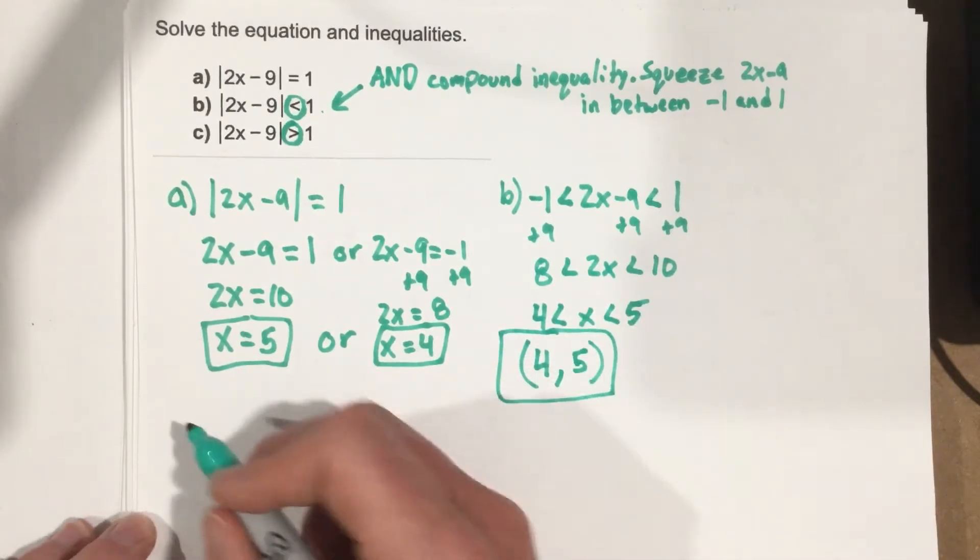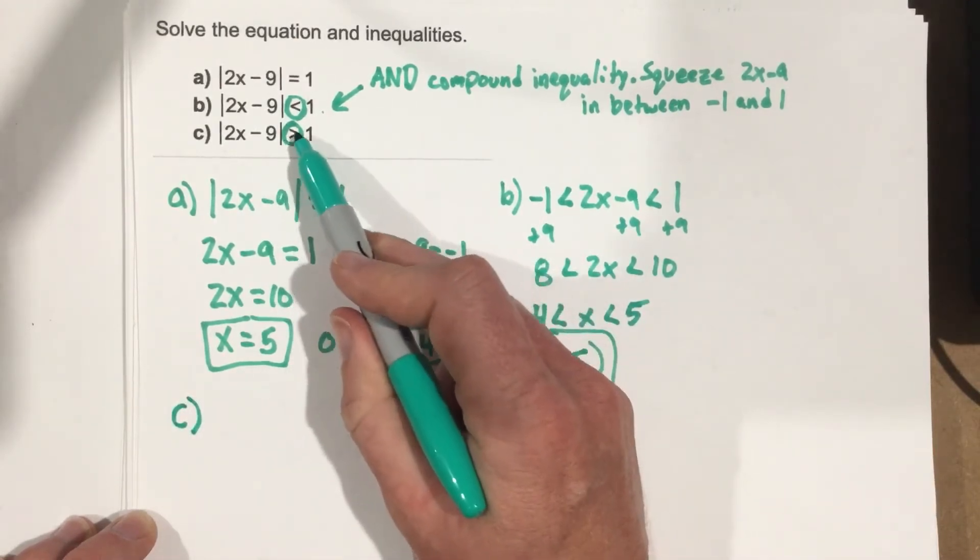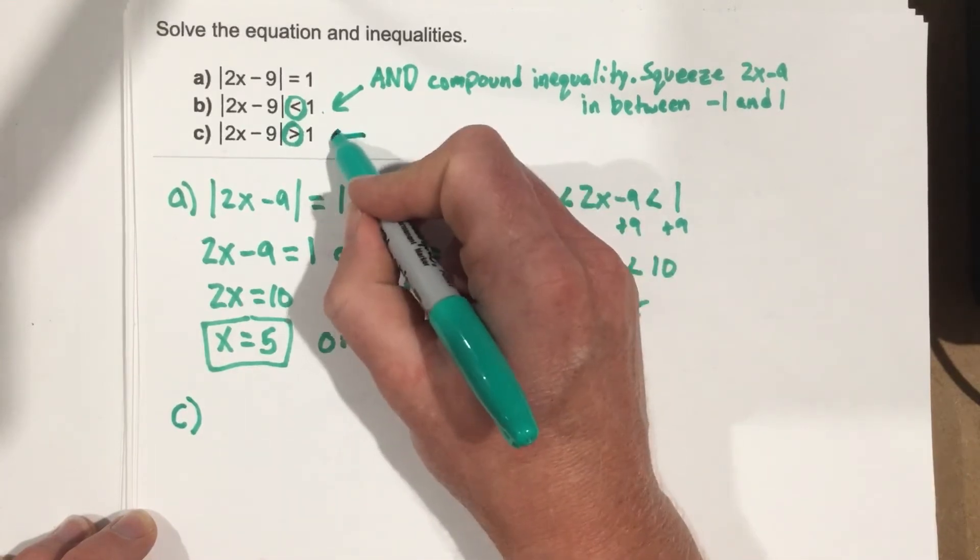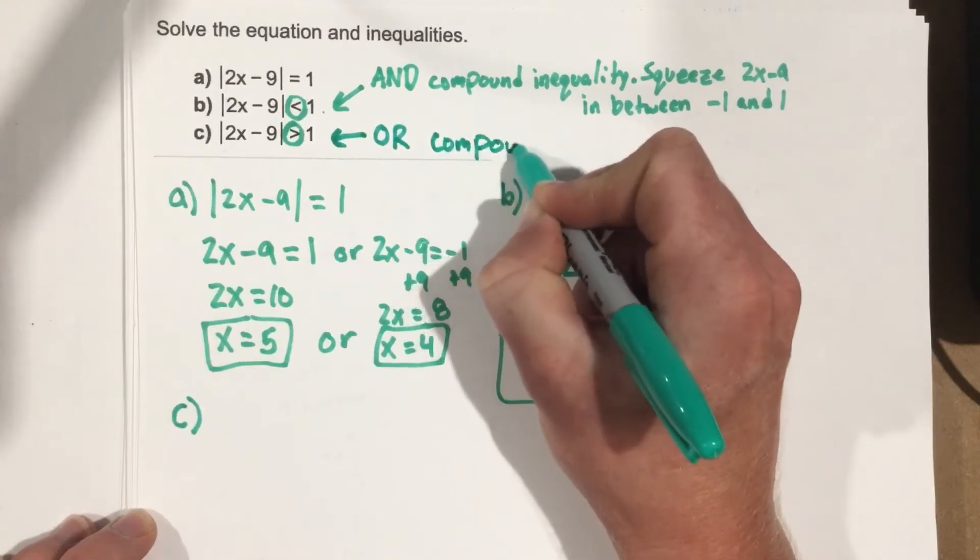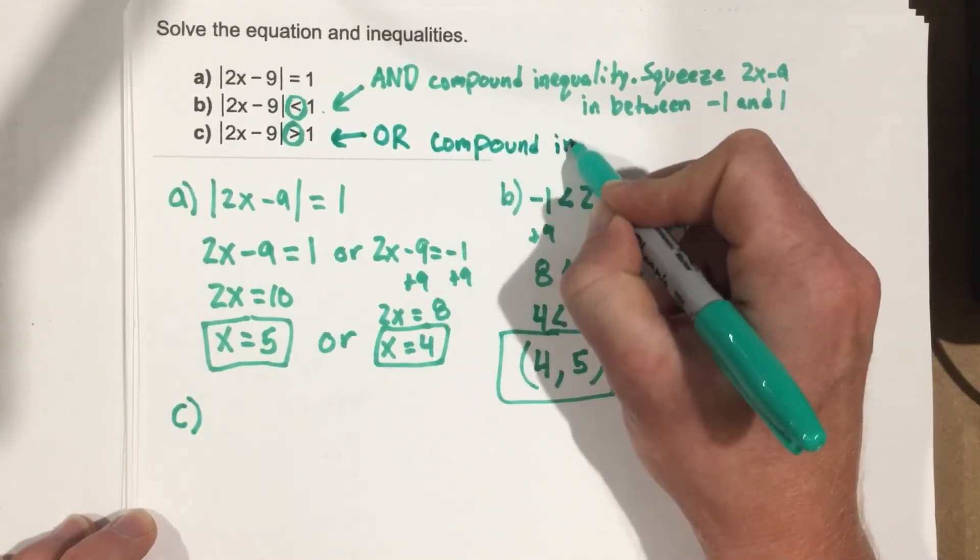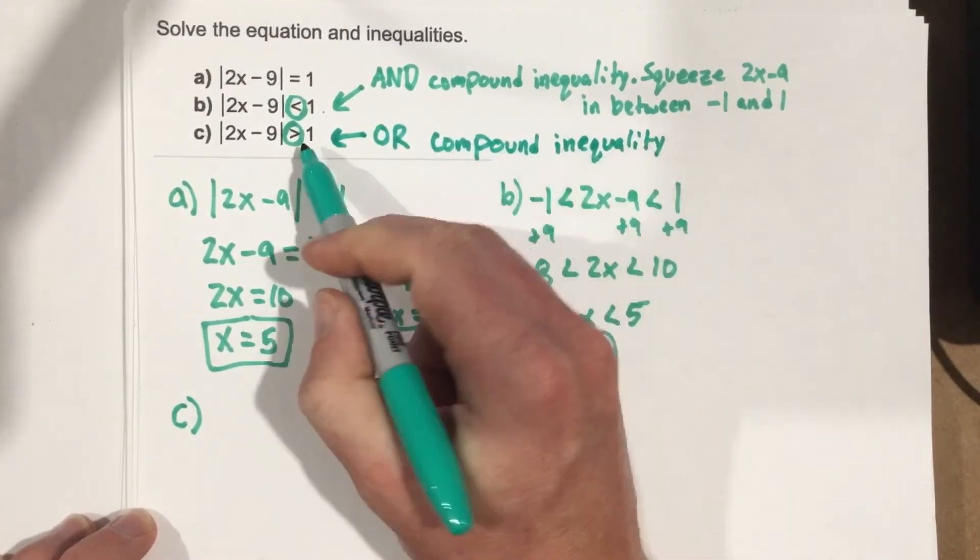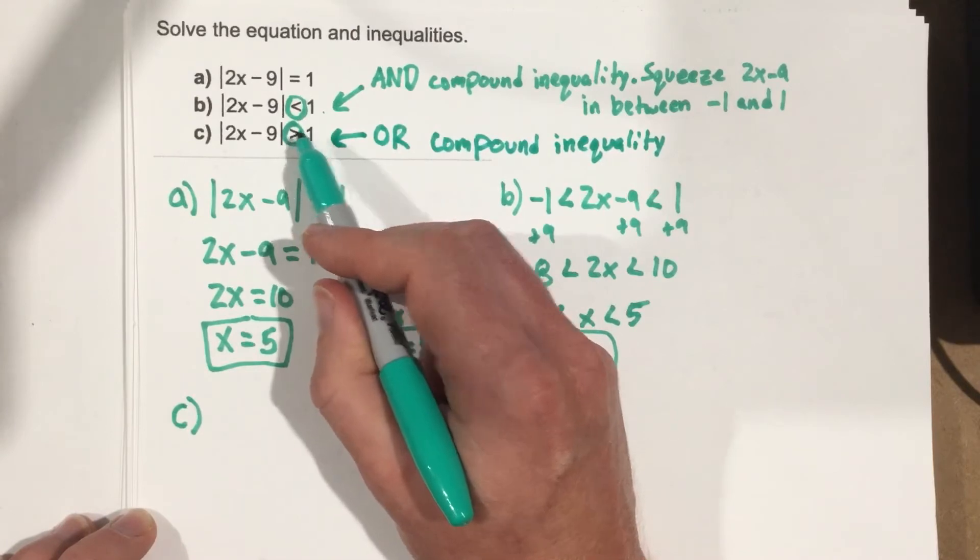Now for part c. So part c, now we're going to use, because it says greater than 1, this is an or compound inequality. Because it has to be greater than 1, it's either going to be greater than 1, or it's going to be less than negative 1.